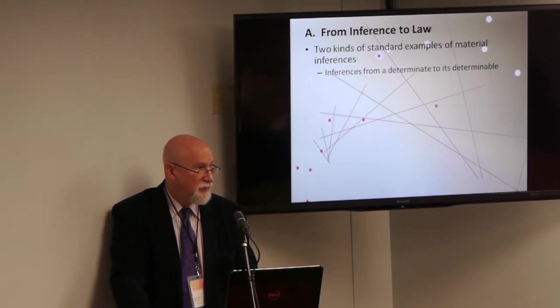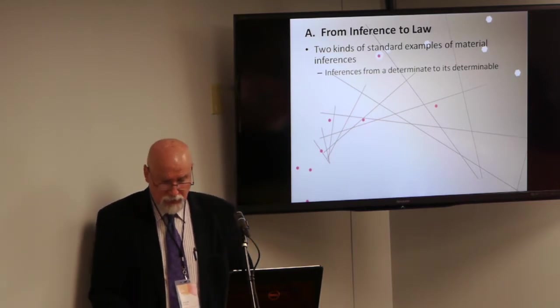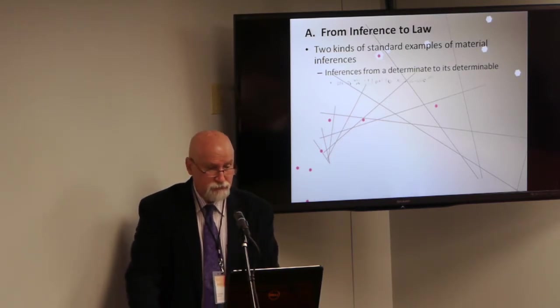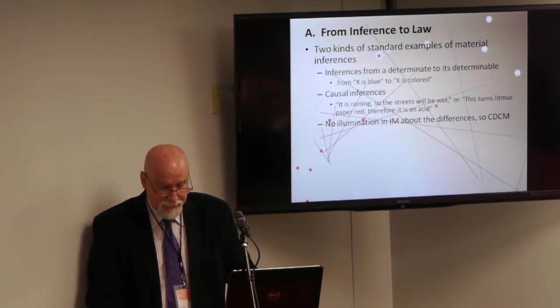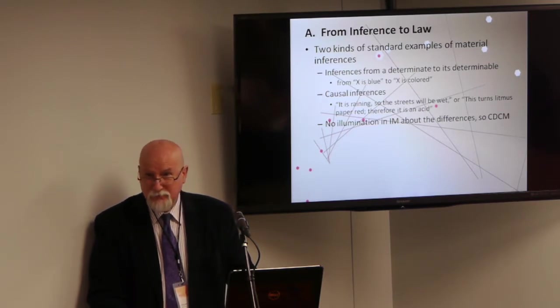One kind is the inference from a determinant to a determinable, from X is blue to X is colored. He pointed out that, of course, there's a good material inference from X is colored to X is extended, and that's not a determinable kind of relation. Nor is it a causal relation, because the other standard examples that Sellars uses are, in fact, causal relations. He mentions, it is raining, so the streets will be wet. Or, this turns litmus paper red, therefore it's an acid. Those are his examples. Both kinds of examples can provide evidence that meanings and inferences are connected. Both demonstrate ways in which inferential connections serve to locate claims in a logical space of reasons, but they are significantly different in other ways. And Sellars doesn't really say much about this in inference and meaning. He just sort of drops the examples and moves on.